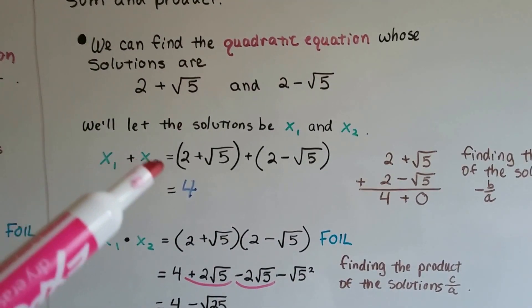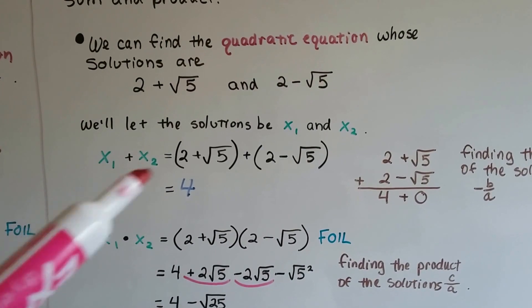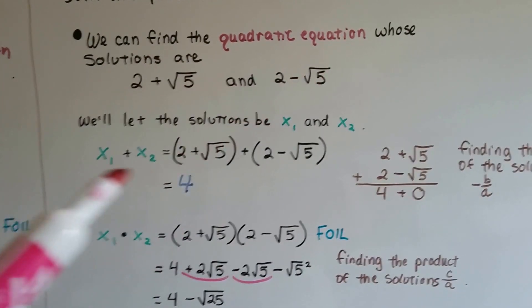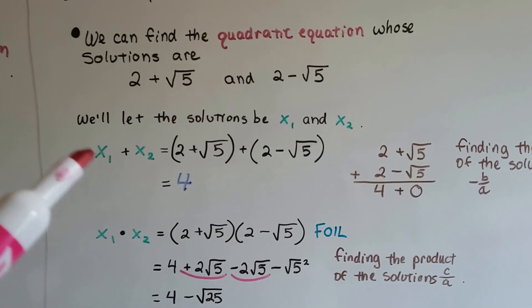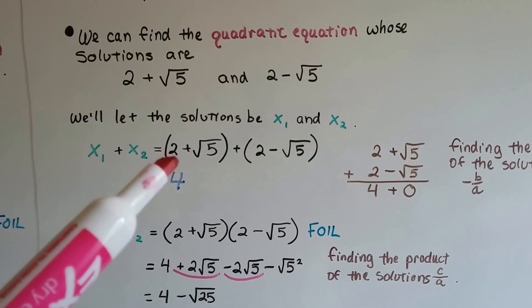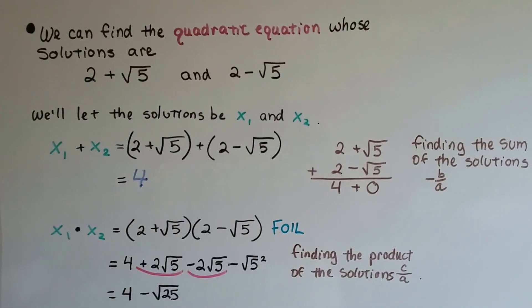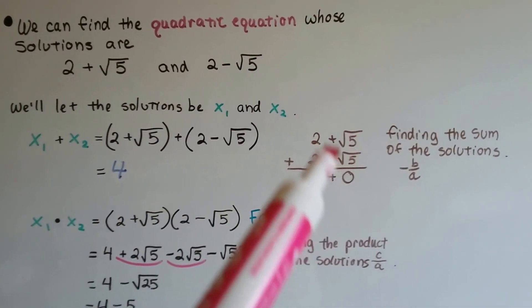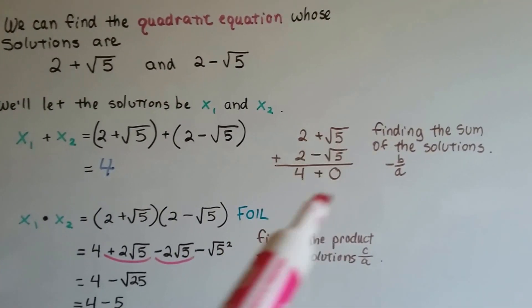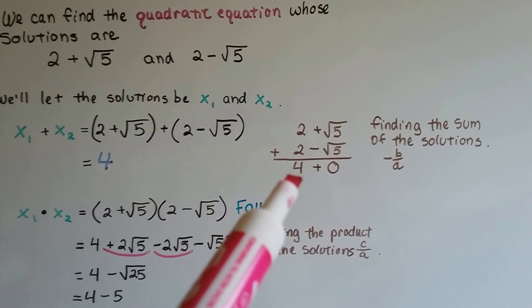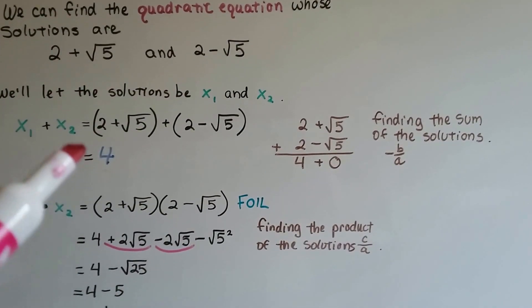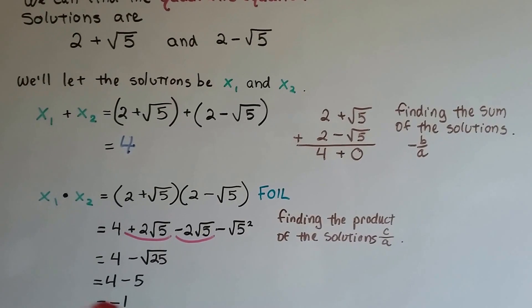If we're going to have the sum of them, then we need to add these two together. So x₁ + x₂ = (2 + √5) + (2 - √5). Well, this and this makes a zero pair—that's an additive inverse—so we just end up with 4. And that's for finding the sum of the solutions, that -b/a.